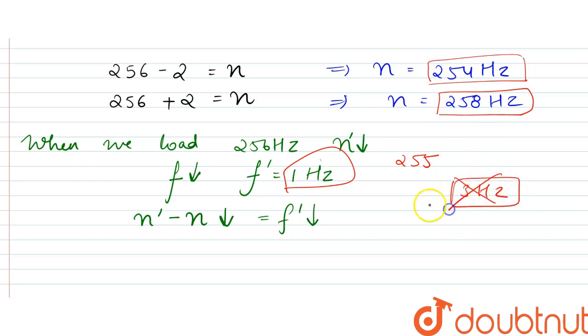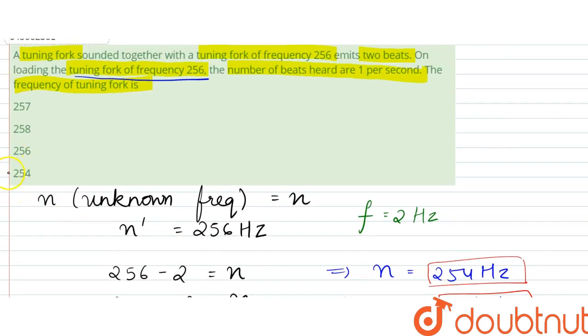Right, which is wrong because we are getting one hertz beating frequency. Right, so the correct answer would be the unknown frequency is equal to 254 hertz. Right, so that is our answer. That is option D is our answer.